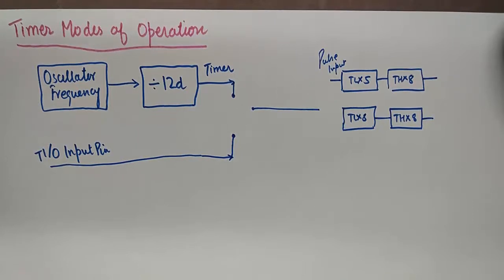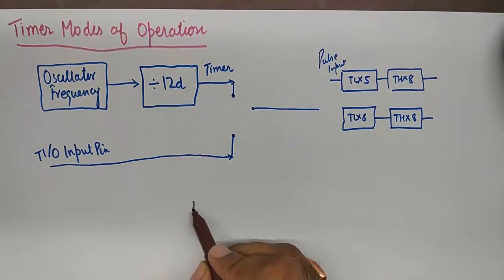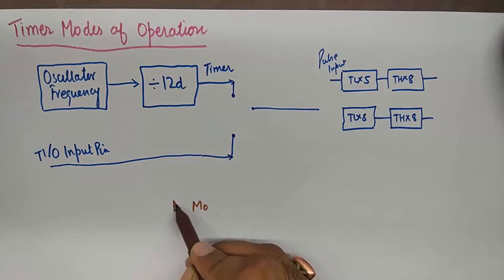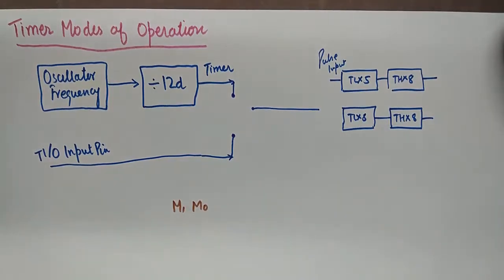In this tutorial we will discuss timer modes. There are four modes in which timers of 8051 operate, and they can be selected using the M0 and M1 bits. We already discussed that these bits are present in TMOD register, and these bits are present for timer 0 and timer 1 as well. So you will find two sets of these bits, one for timer 0 and one for timer 1.